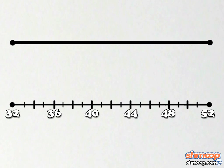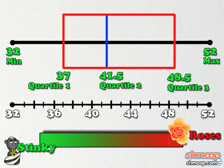Now just note the extreme values, which are the bottom and top scores — Ben with 32, and Bradley with 52. You can use this data to create your chart, which should look like this. And you're done.